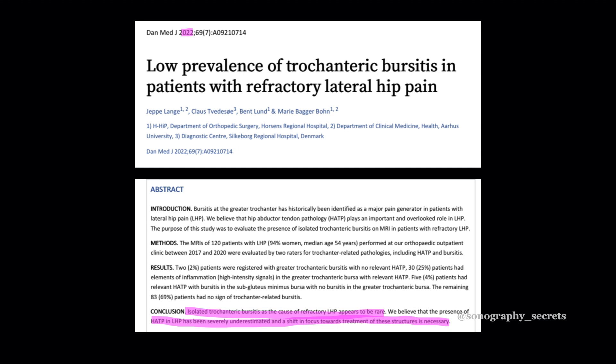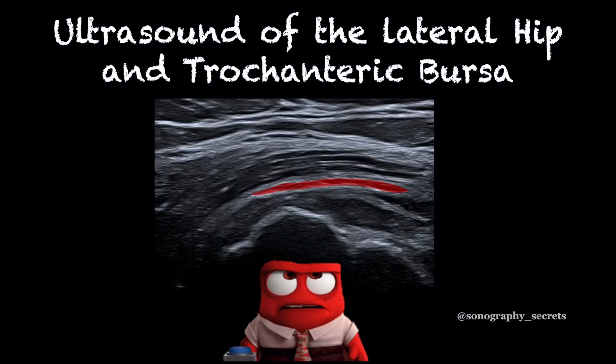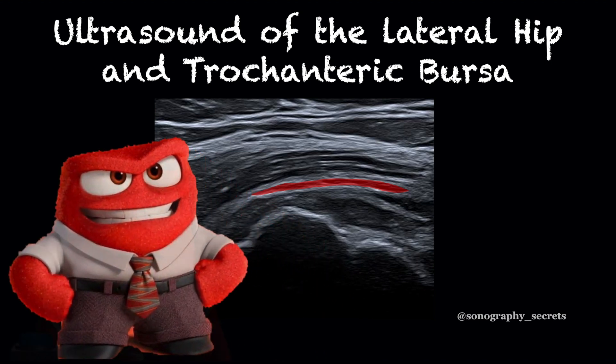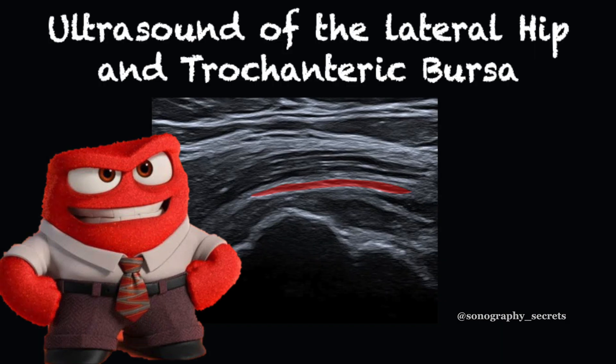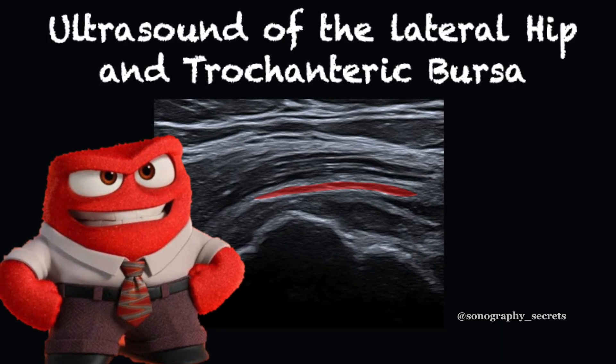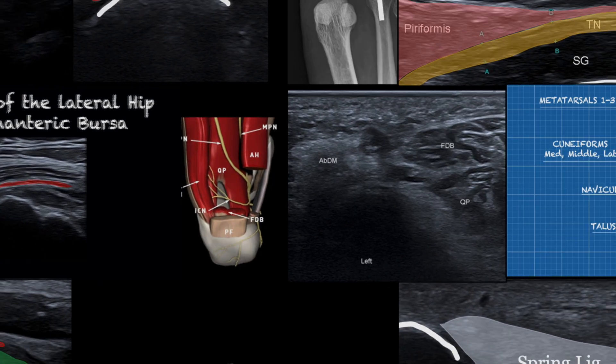Hip abductor tendon pathology has been severely underestimated, and a shift in focus towards treatment of these structures is necessary. Something that helped me overcome my frustration with the sheer number of trochanteric bursal injections we do were the words from the guys at MSK Australia, who told me: don't think of these injections as bursal injections to treat bursitis, but rather as peritendinous injections to treat tendinosis. This helped me change my entire approach and outlook on ultrasound of the lateral hip and trochanteric bursitis.